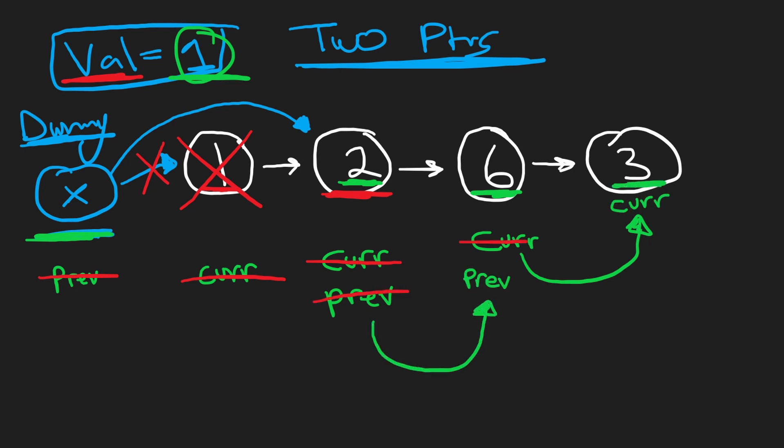And last but not least, three is not equal to one. So we shift our pointers one more time. Current is going to be over here, but this is null. So we've basically gone through the entire list. We removed the one element that we needed to. There was only one element that we needed to remove.